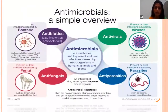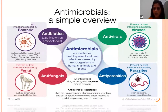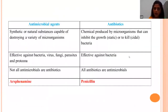Antimicrobial substances are chemical substances of natural, synthetic, or semi-synthetic origin used either to kill microorganisms or to inhibit their growth. We broadly call them antimicrobials. They can be antibiotics used against bacteria, antivirals against viral infections, antifungals against fungal infections, and antiparasitic agents that can be endoparasitic or ectoparasitic.